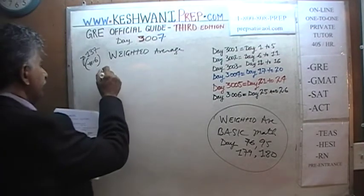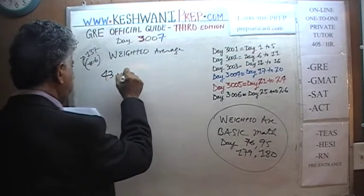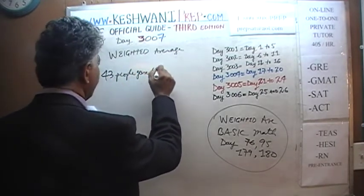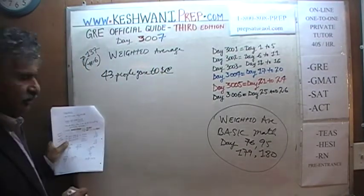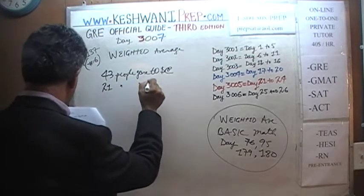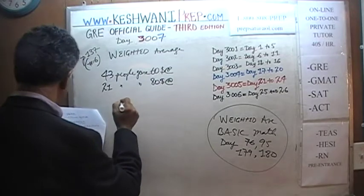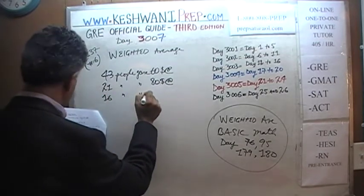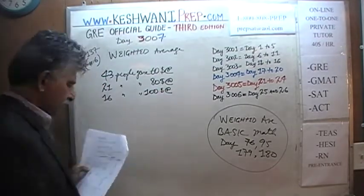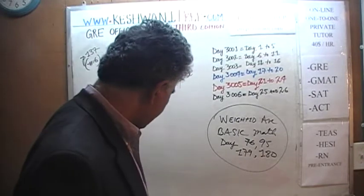Here's what we are told. We are told that 43 people gave $60 each. We are also told that 21 people gave $80 each. We are told that 16 people gave $100 each. The question simply is: what is the average contribution? Obviously it is the weighted average, so let's find out.